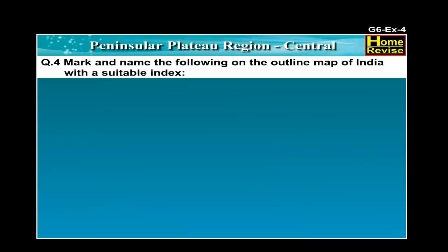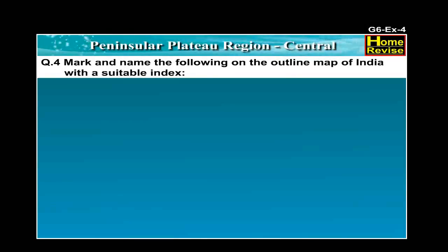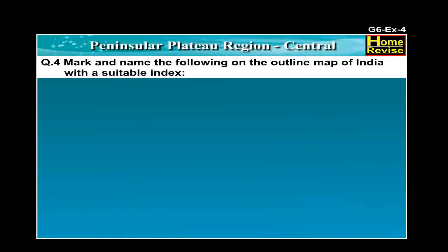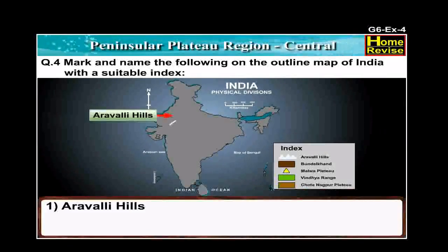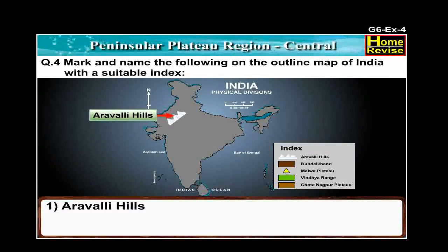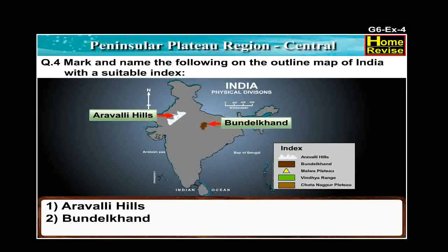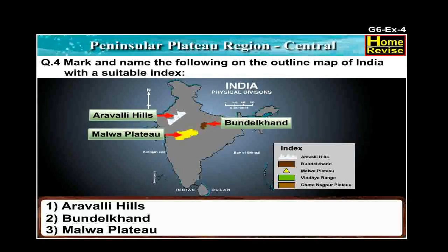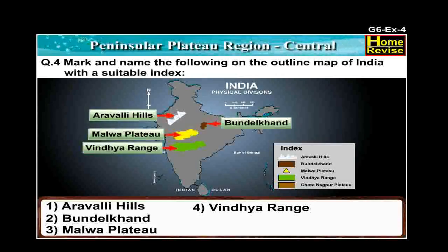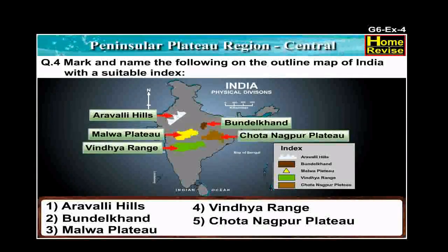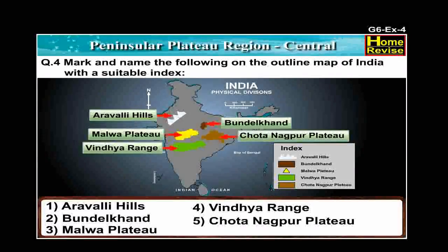Question number 4: Mark and name the following on the outline map of India with the suitable index. On the outline map of India, we find Aravalli Hills here. Here is the Bundelkhand and here lies the Malwa Plateau. This region represents the Vindhya Range and this is the Chhota Nagpur Plateau. Thank you.